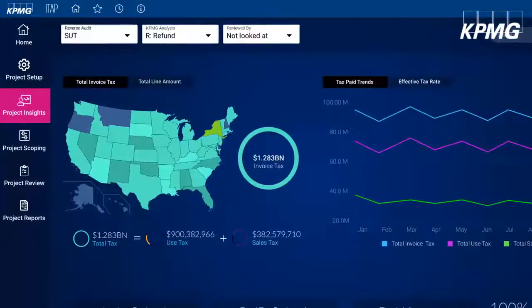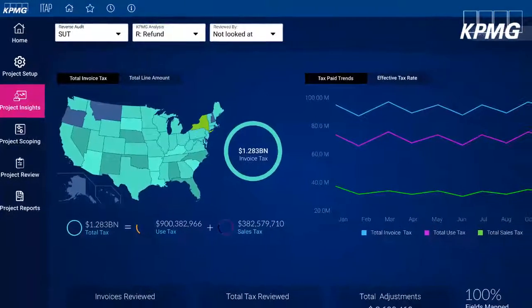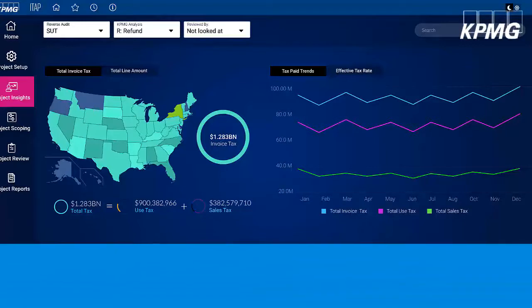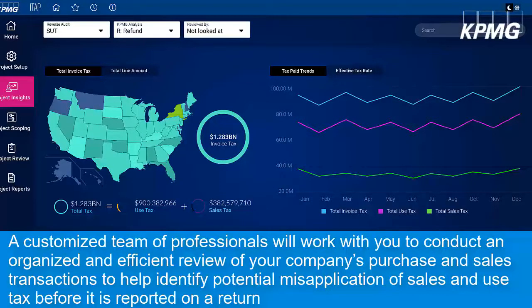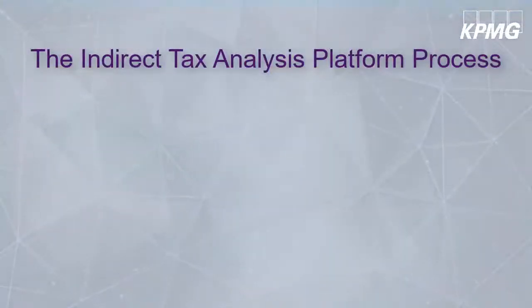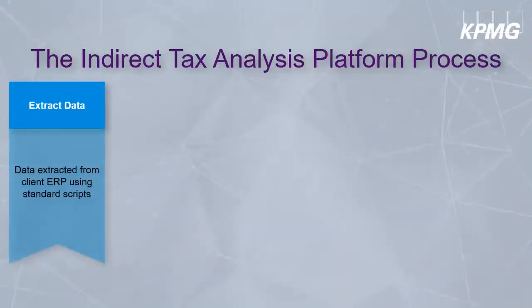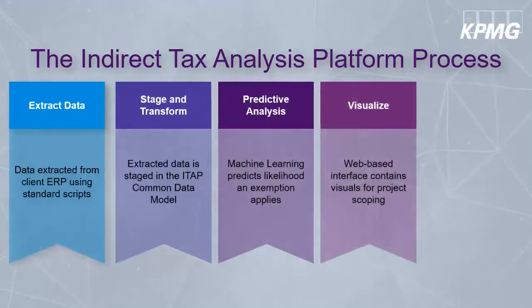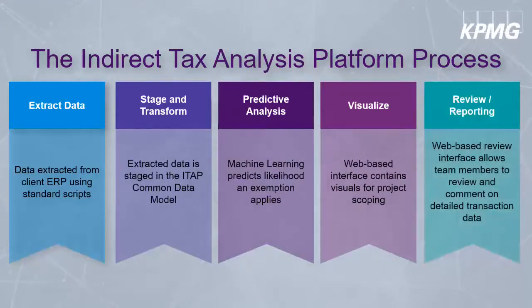And this is where KPMG's indirect tax analytics platform can help. KPMG's indirect tax managed services utilizes the proprietary KPMG indirect tax analytics platform in conjunction with a customized team of professionals who will conduct an organized and efficient review of your company's purchase and sales transactions to help identify potential misapplication of sales and use taxes before it is reported on a return. We do this by leveraging data extraction scripts, machine learning, and the indirect tax analytics platform to extract, stage, transform, and review data for potential under or over payments of sales and use tax. Our efficient approach can help a company significantly reduce its potential exposure to audit risk related to underpaid tax, while also avoiding potentially overpaying tax and having to seek refunds.